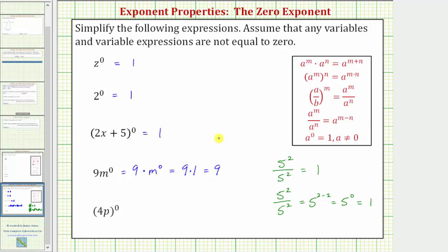Looking at our last expression, we have four p raised to the power of zero, and because the four p is in parentheses, this entire quantity is raised to the zero power, and therefore it's equal to one. I hope you found this helpful.